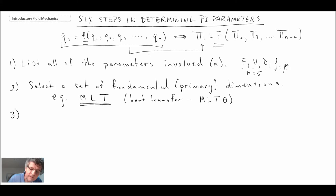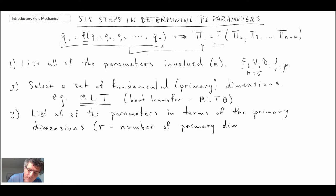Third step would be to list all of your parameters in terms of the primary dimensions, and r would be then the number of primary dimensions. So that would be mass, length, time. Typically r is three, but sometimes like I said it could be four.